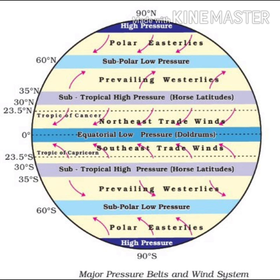Let us take information about the major difference between temperature zones and pressure belts. Temperature zones are continuous and are spread from the equator to the pole — from the torrid zone to the frigid zone. On the other hand, pressure belts are not continuous; areas of high and low pressure are found in different regions from the equator to the poles. This is an important question — what is the difference between temperature zones and pressure belts?